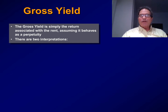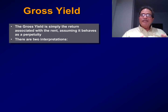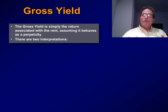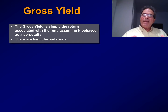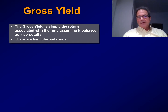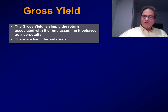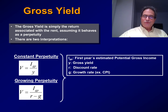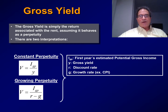Let's start talking about the gross yield. The gross yield is simply the return associated with the rent, assuming that the rent behaves as a perpetuity. There are two possible interpretations: the first case is a constant perpetuity and the other is a growing perpetuity.